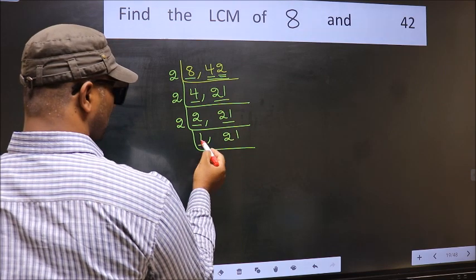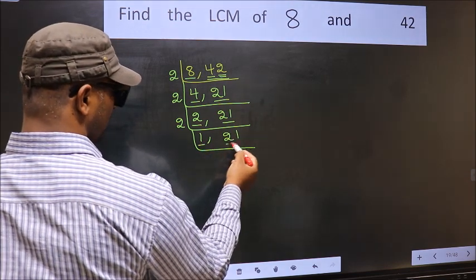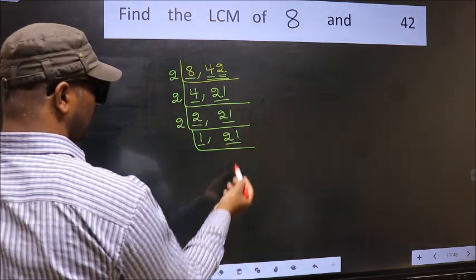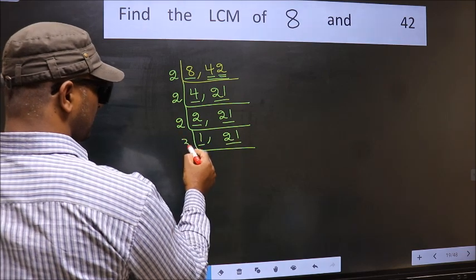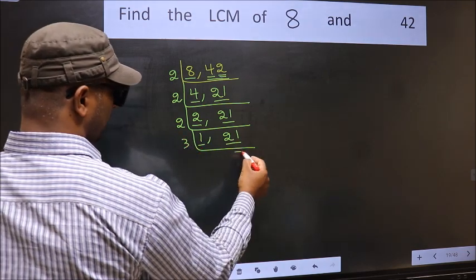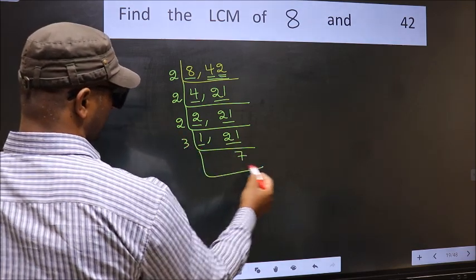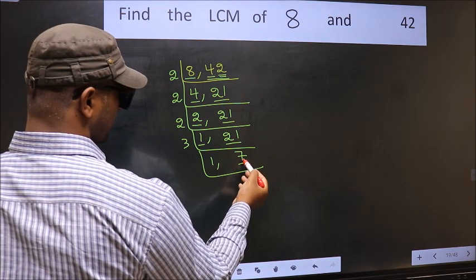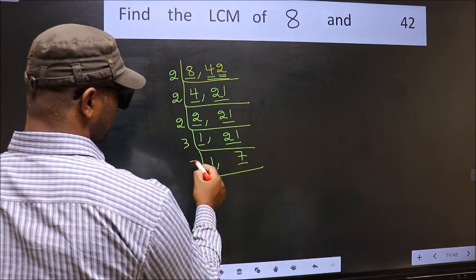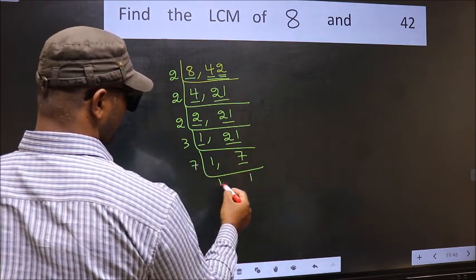We got 1 here, so focus on the other number 21. 21 is 3 times 7, which is 21. Now we have 7 — 7 is a prime number, so 7 times 1 is 7.